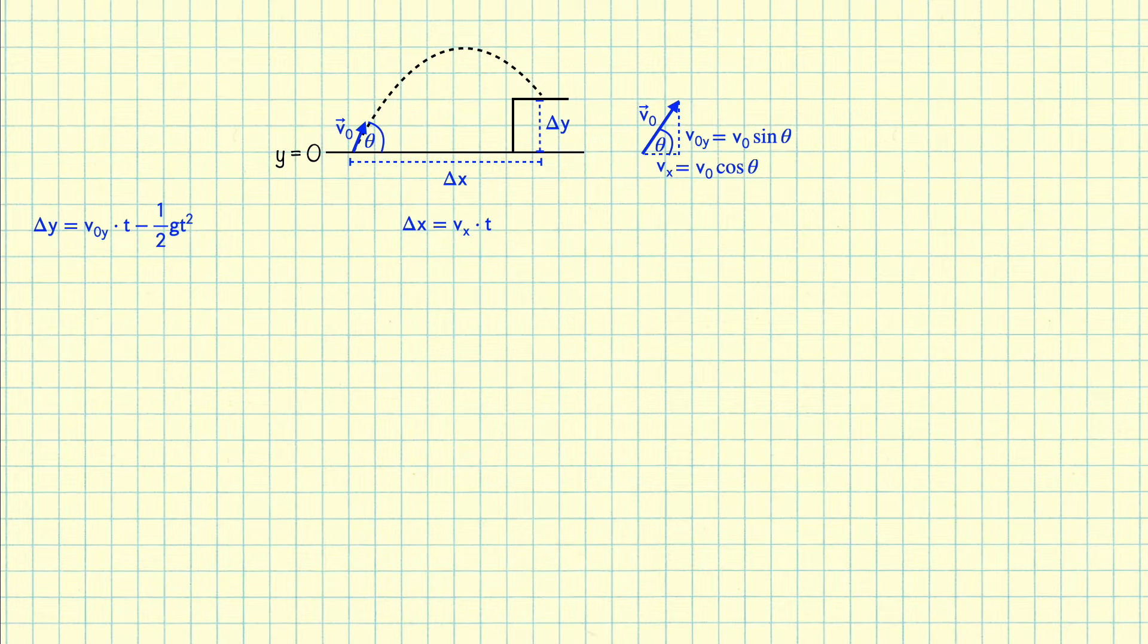Now we need to find the time at which the ball is caught. This will be the time when the ball reaches a height delta y. So let's take our equation for delta y and solve for time. Notice that this equation is a polynomial of degree 2, meaning it's a quadratic equation in time. So I'm going to rearrange the terms by putting them all on the left side of the equation in order to get them in a quadratic form. Now I can use the quadratic equation to solve for time.